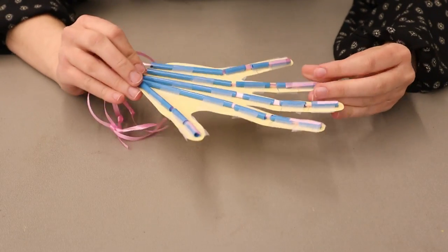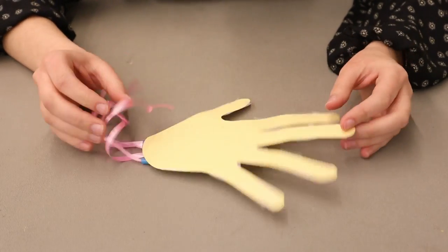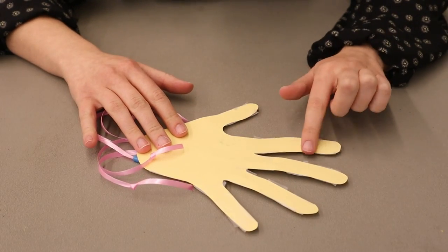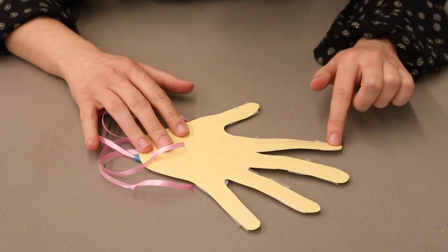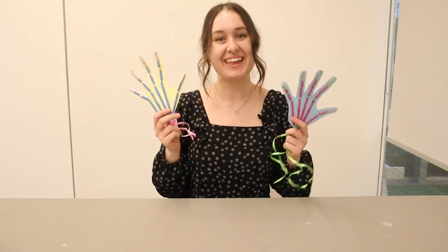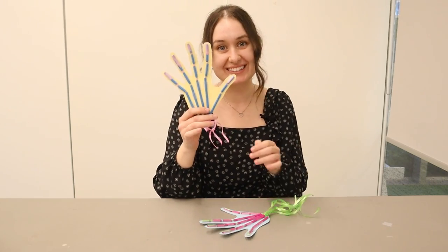Now, this is completely optional. You can flip over your hand, and you can decorate your fingers with nails, or even jewelry. And there you have it, your very own articulated hand.